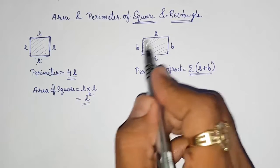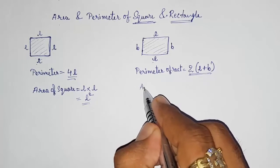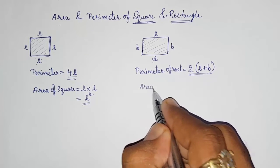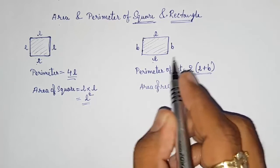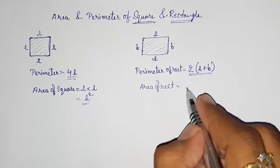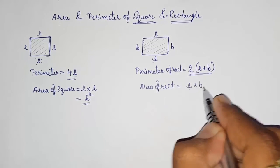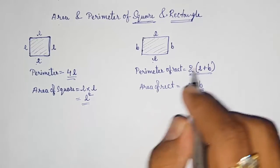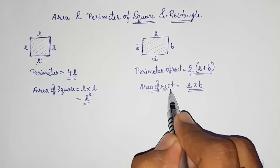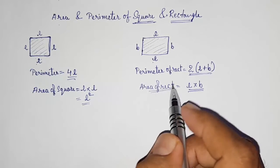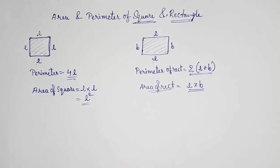For finding the area of rectangle: you have to multiply the length and breadth, so length into breadth. This way you can find out the area of rectangle. Thank you so much for watching my video — if you like it, please subscribe to my channel. Thank you so much.